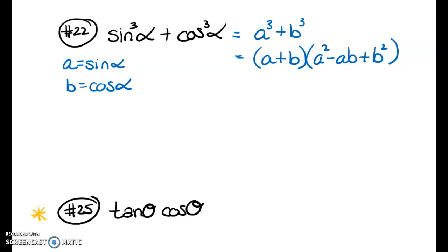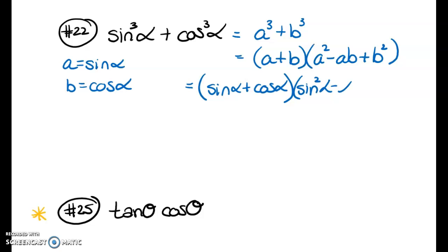Now I'll do a direct substitution: (sine α + cos α)(sin²α − sin α · cos α + cos²α). I didn't give myself quite enough space to write it all in, but that is sine cubed alpha plus cosine cubed alpha in fully factored form.